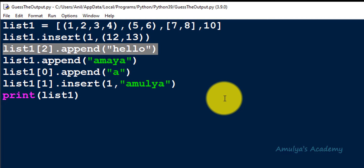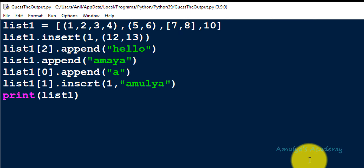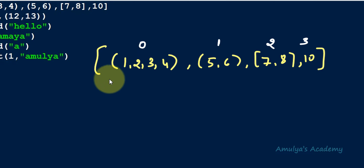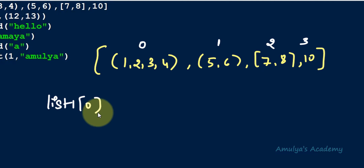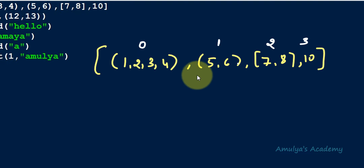To understand why we are getting the error, we need to write down the list and its indices. Index 0, 1, 2, and 3. So when I take list1[0] we get the first tuple, list1[1] we get the second tuple, list1[2] we get the list containing 7 and 8, and list1[3] we get 10. The elements of the list can be tuples or lists.